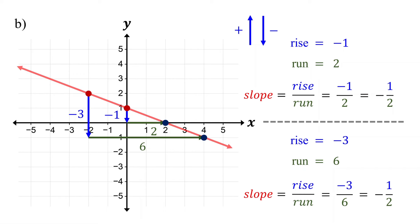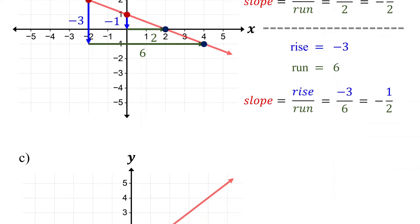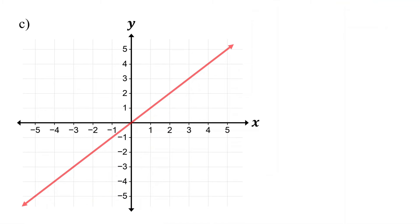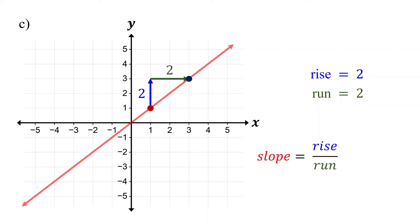Now, before we move on to finding the slope of horizontal and vertical lines, pause the video and try this one. Start by locating two points on the line. Next, find the rise and run. Starting at the point on the left, move up two units, so the rise is two. Then, move to the right two units, so the run is also two. Therefore, the slope is two over two, which equals one.